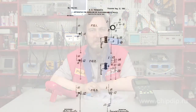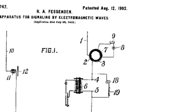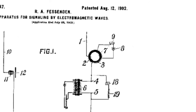The transmitter built by Fessenden had a similar but reverse structure. The signal from the generator passed through a fast rotary transducer, generating an alternating voltage of 50 kHz, which was first applied to the mixer detector, where a microphone-modulated alternating voltage was added to the signal.